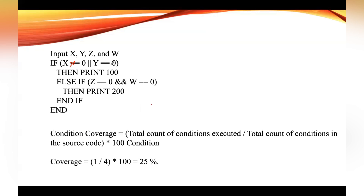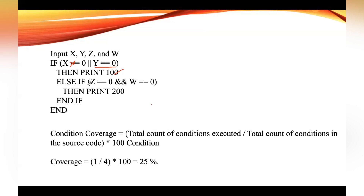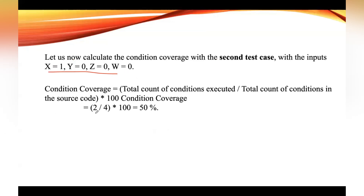As a result, the left side of the OR is false. Now the right side expression, y equal to zero, will be evaluated. Yes, y value is equal to zero, so the third statement will be executed printing 100. Then the condition 'if z equal to zero and w equal to zero' in the else part will remain unchecked. Out of four conditions, two got executed, so two divided by four into 100 gives 50 percent condition coverage.